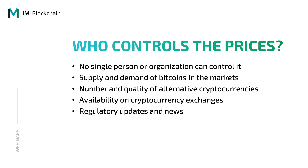It must have occurred to you that if Bitcoin is decentralized, then who or what decides the prices? No single person or organization can control it. Supply and demand of Bitcoins in the markets decide what the price will be. The number and quality of alternative cryptocurrencies also has a key role in deciding the value of Bitcoin. Other than that, availability on cryptocurrency exchanges and regulatory updates and news also affect the prices considerably.